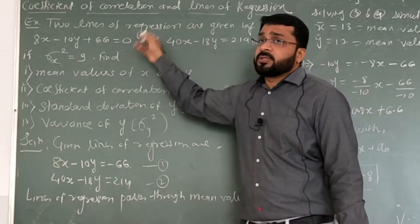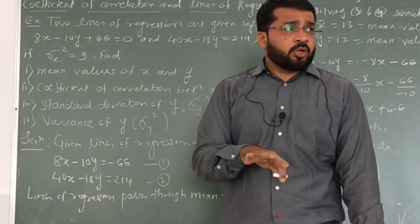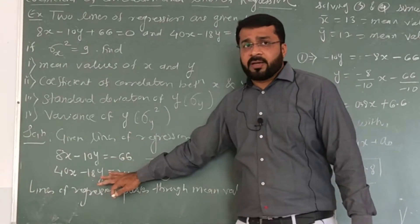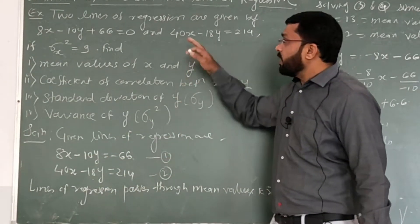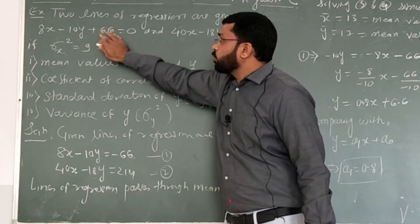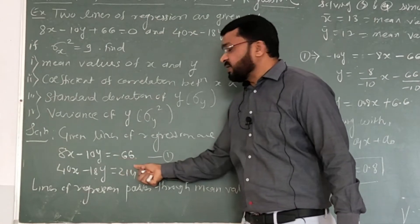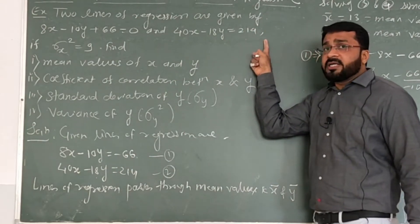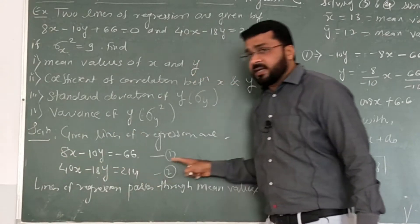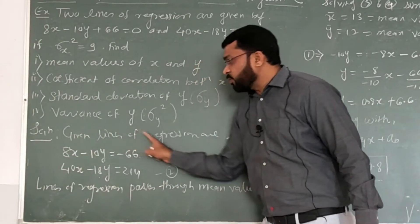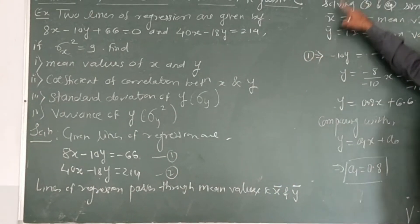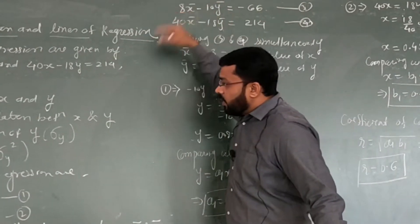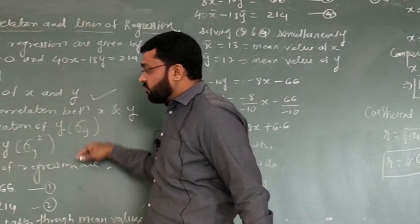We have to determine which line to take as regression line y-on-x and which as x-on-y. Rearranging the first equation gives 8x minus 10y equals minus 66. The second equation is already in standard form. We will identify the regression line y-on-x from these.